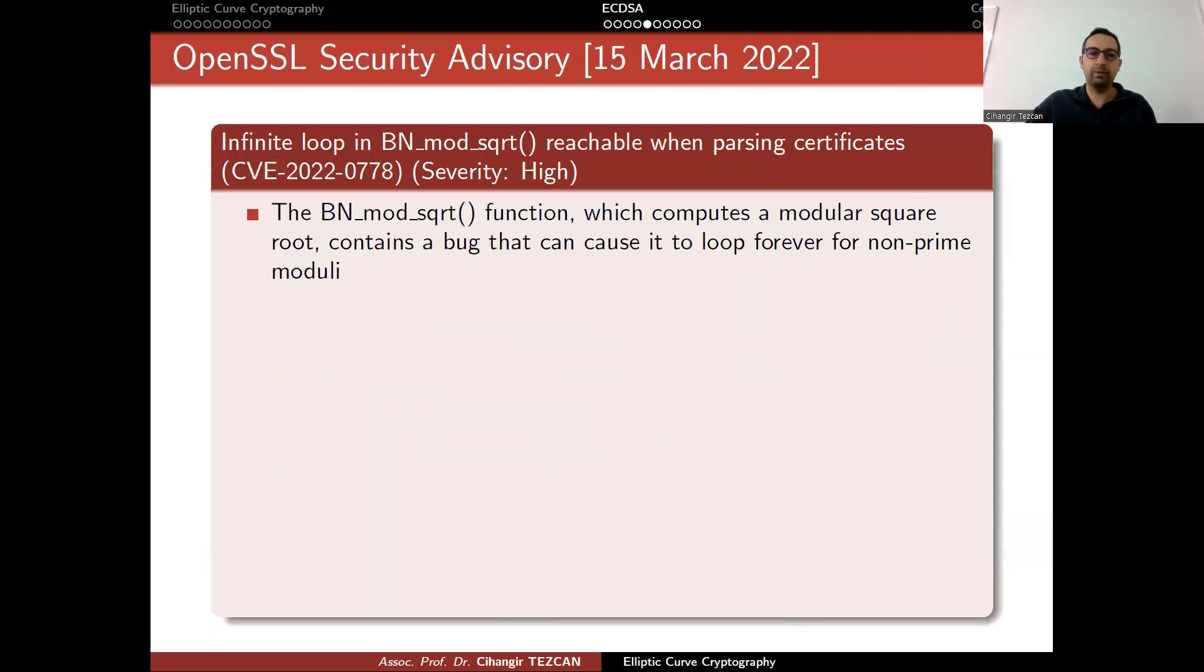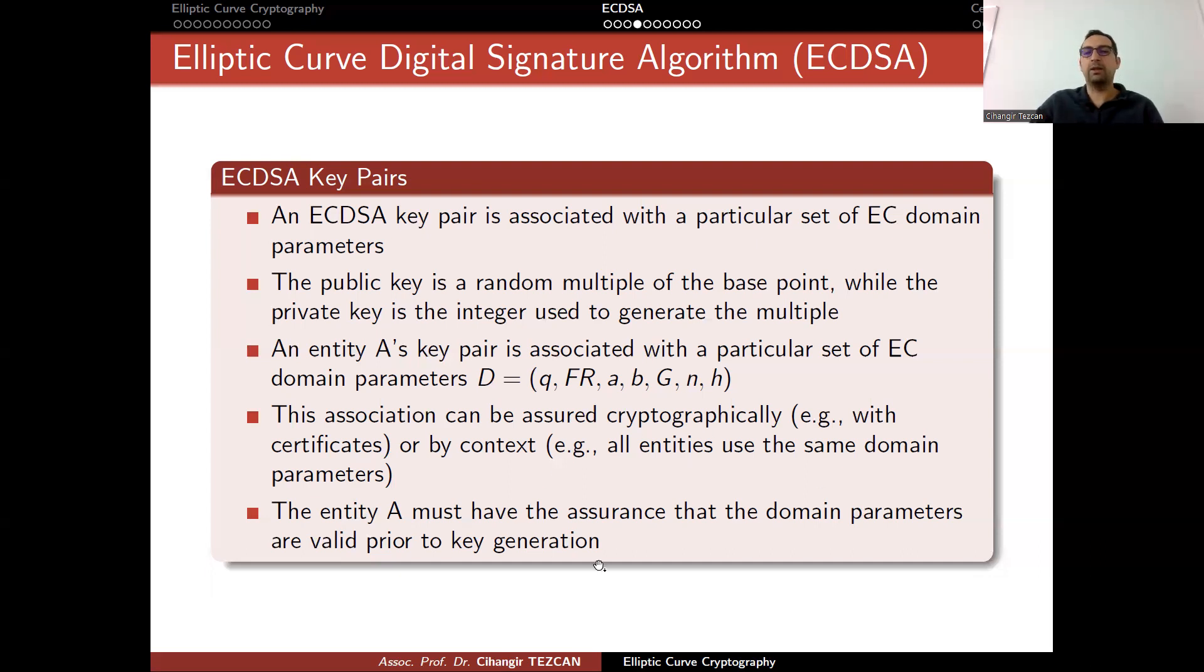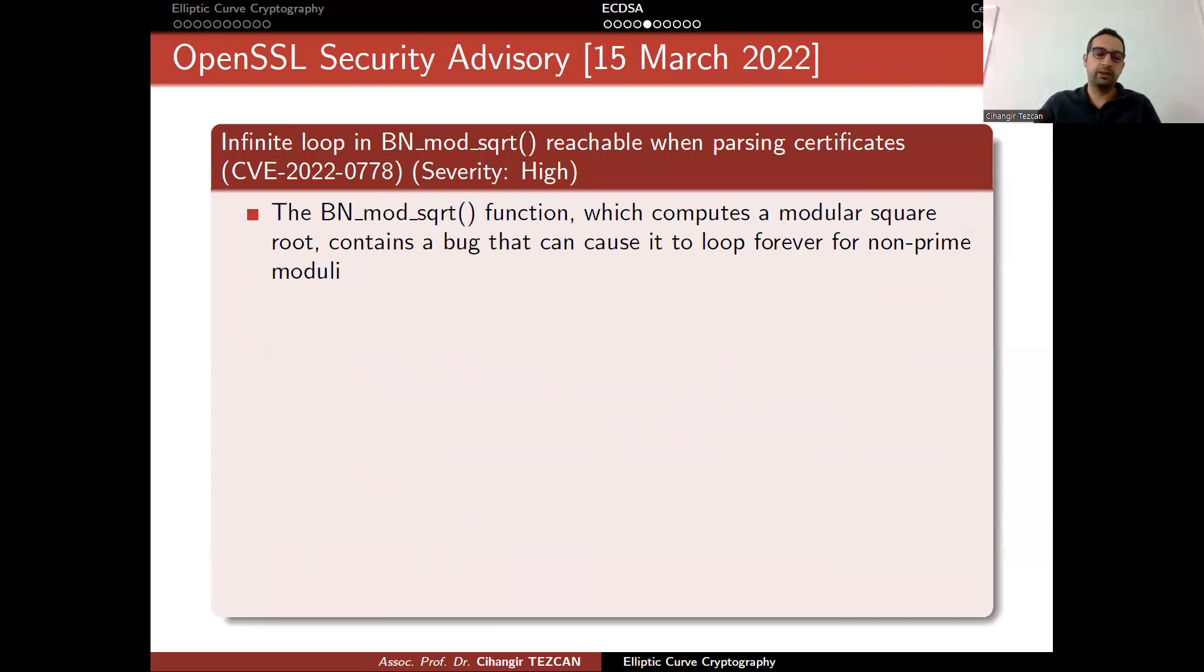This is very, very important because in our documentation, in our papers, we always say that you have to check the domain parameters. But last semester, when I was teaching blockchain and cryptocurrency technologies, this happened, as you can see. This is from OpenSSL Security Advisory from 15th of March 2022, and there was a very important bug. You can look at the CVE with this number. As you can see, the severity is high, and actually, the problem was that there was an infinite loop in bn_mod_sqrt function.